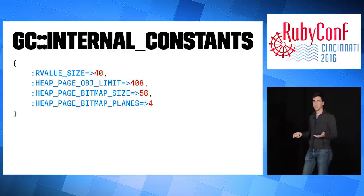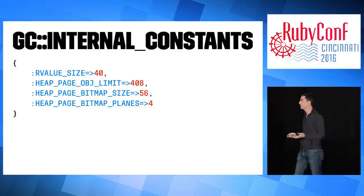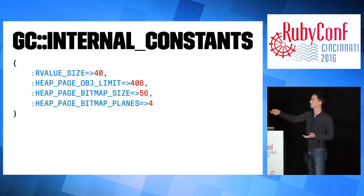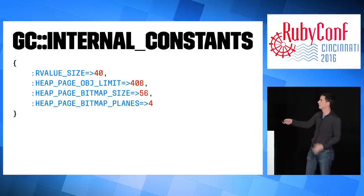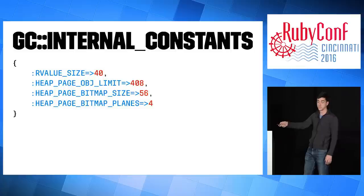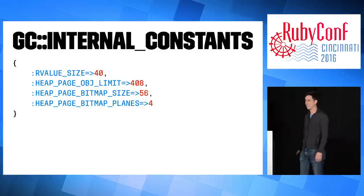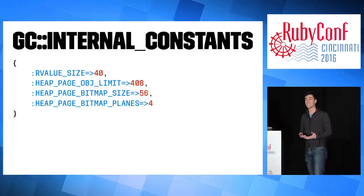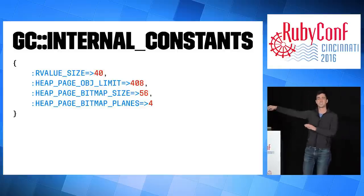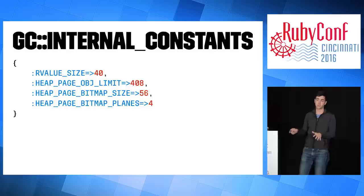These values you can get from GC internal constants, available in any Ruby process. This tells you how big the slot is — the size of an RValue — and how many slots are in a page. This changes based on your architecture; this example is for a 64-bit system.